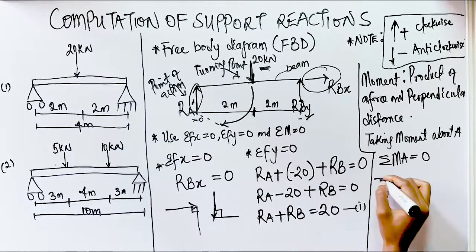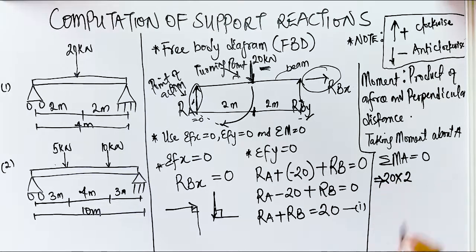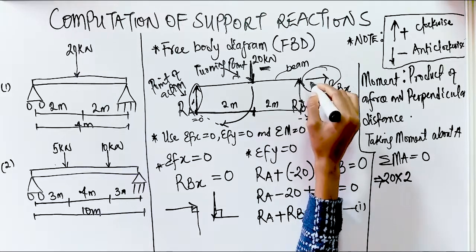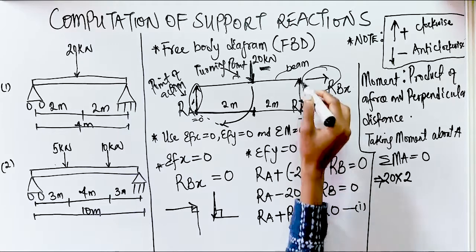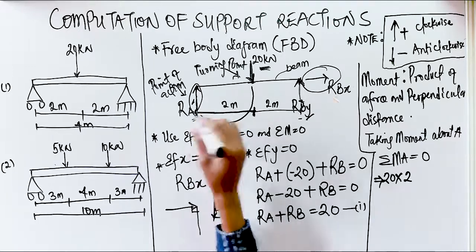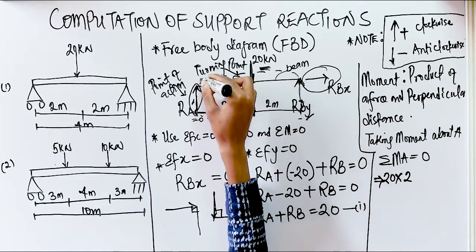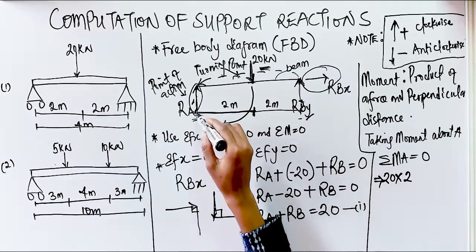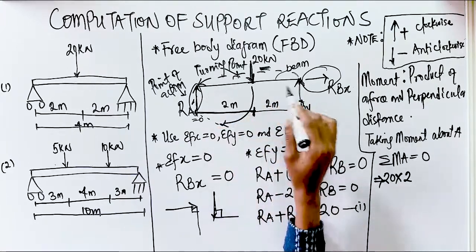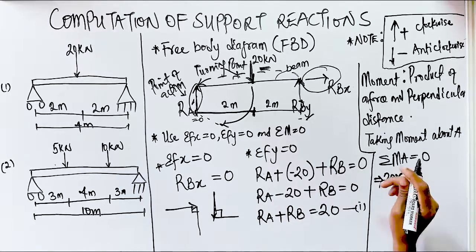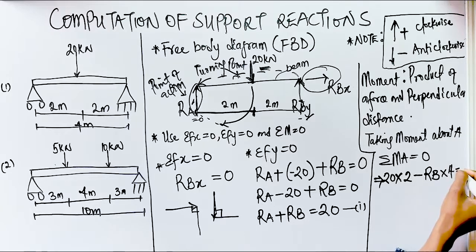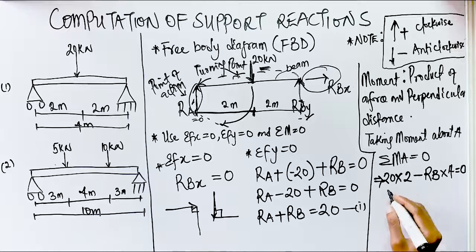We write: 20 kilonewtons times 2 meters — the distance from the 20 kN load to point A. Next, Rby acts upward and its rotation about point A goes in the opposite direction of the clock — that is anti-clockwise, which is negative. So we write minus Rby times 4 meters — the total distance from Rby to A, which is 2 + 2 = 4 meters. Setting the sum equal to zero: 20 × 2 − Rb × 4 = 0.